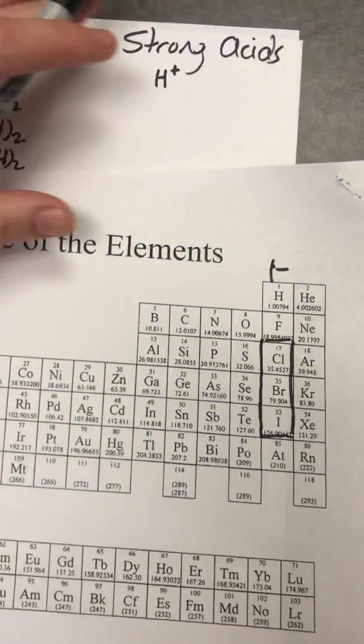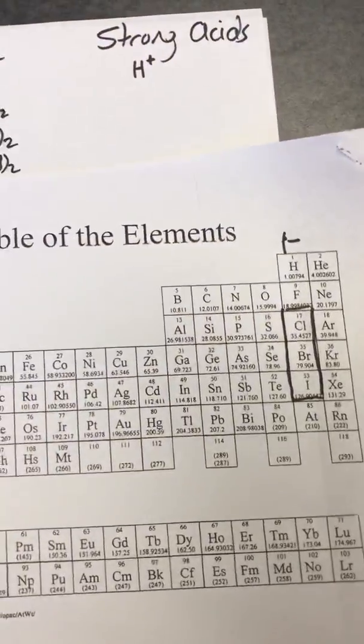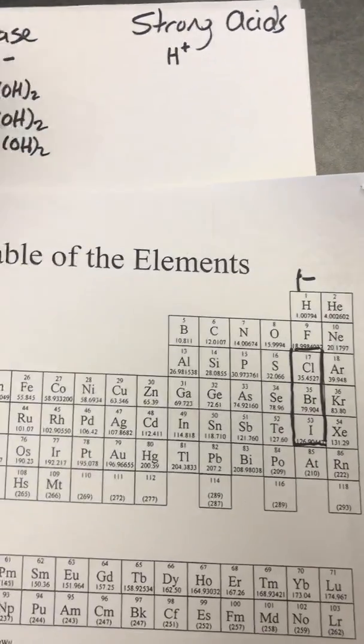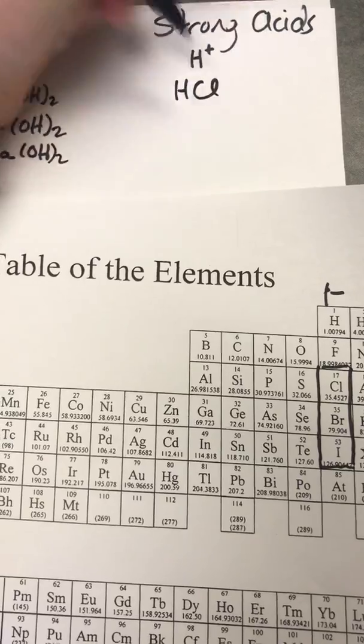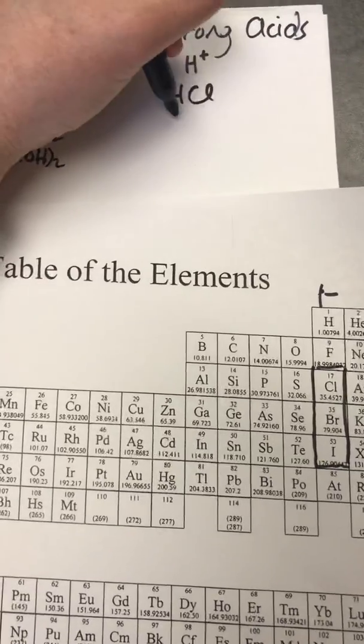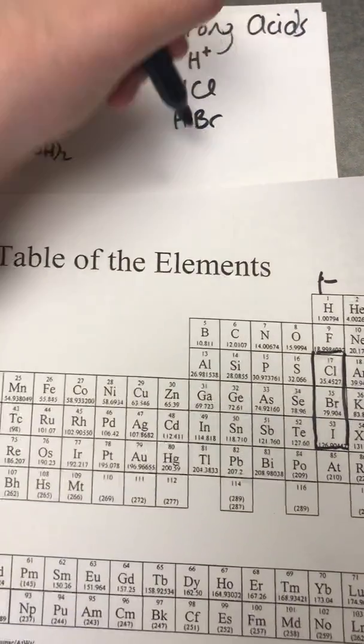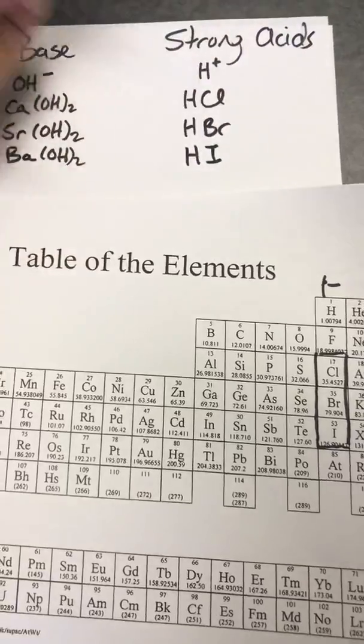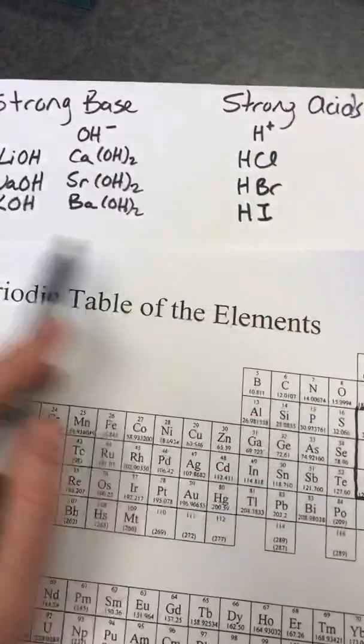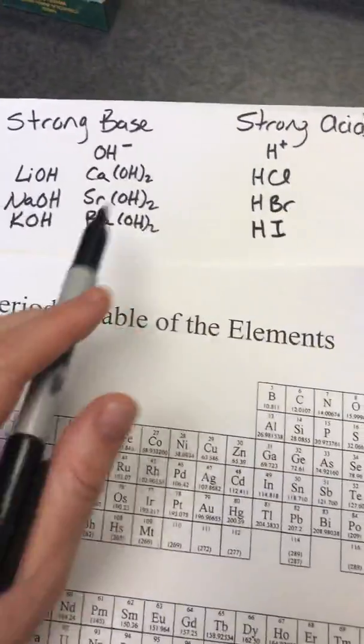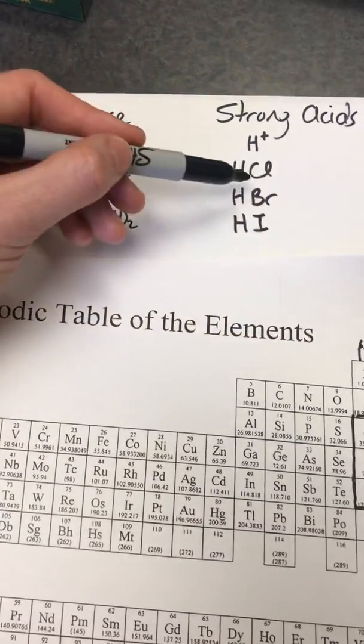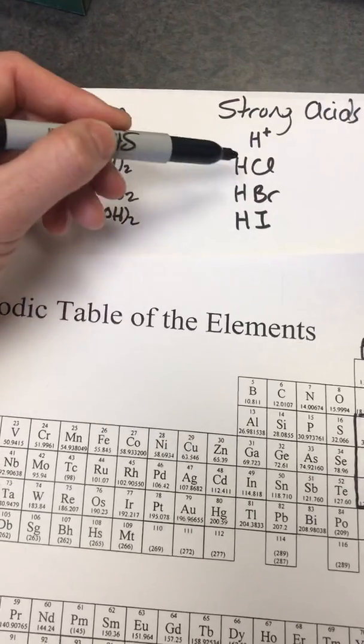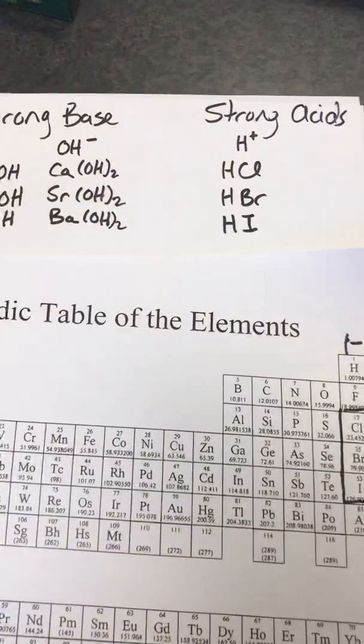So those three for sure. So chloride has negative 1 charge, bromide is negative 1, and iodide is negative 1. So HCl, HBr, and HI are all going to be strong acids. And we're assuming all of these are aqueous. When they're aqueous, they're going to be strong bases and strong acids. Alright, so Cl, Br, and I gave us this HCl, HBr, and HI, hydrochloric, hydrobromic, and hydroiodic acids.